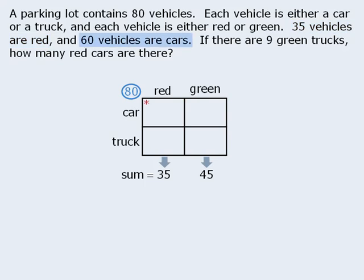Next we are told that 60 of the vehicles are cars. Now some of these 60 cars are red cars, and some are green cars. So we can't place any of the cars in either of the two individual boxes. However, we do know that the sum of these two boxes must be 60, since we have 60 cars altogether.